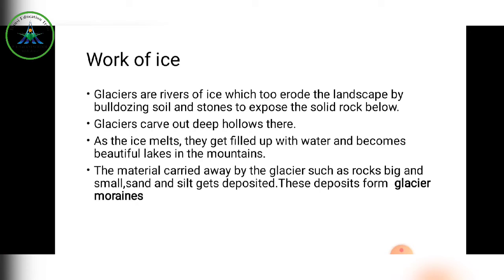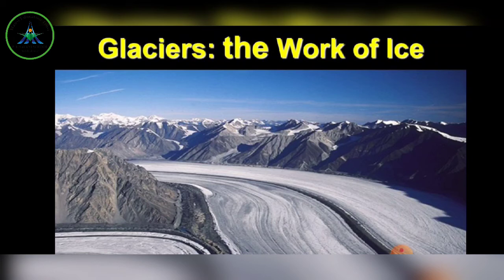The material carried away by the glacier — such as big and small rocks, sand, and silt — all get deposited. These deposits form glacier moraines. Glacier moraines are the materials — rocks, sand, silt — carried and deposited by a glacier. You can see the glacier picture showing the work of ice and the water that forms when it melts in summer.